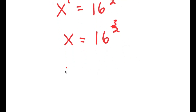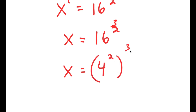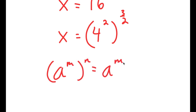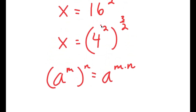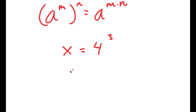16 to the power of 3 over 2 is the same thing as 4 squared to the power of 3 over 2. Again, if I have something in the form a to the power of m to the power of n, this is equal to a to the power of m times n. So these two cancel out, and I get x is equal to 4 to the power of 3, and 4 to the power of 3 is equal to 64. So I get x is equal to 64.